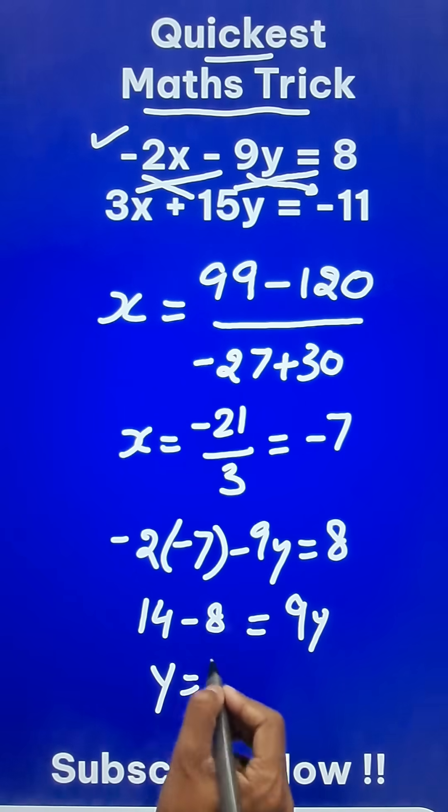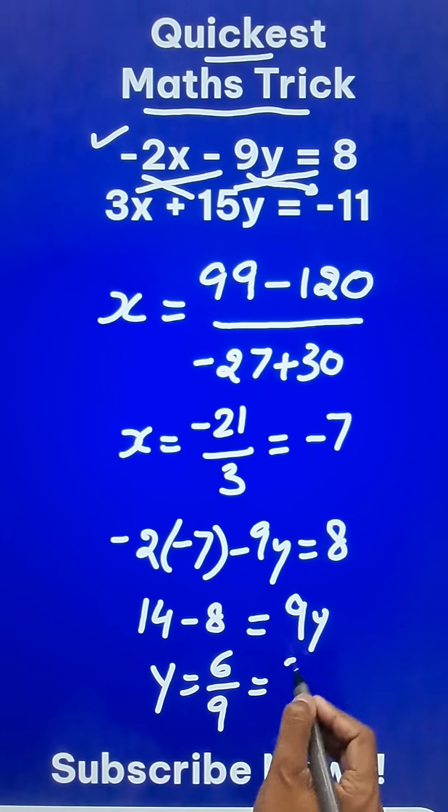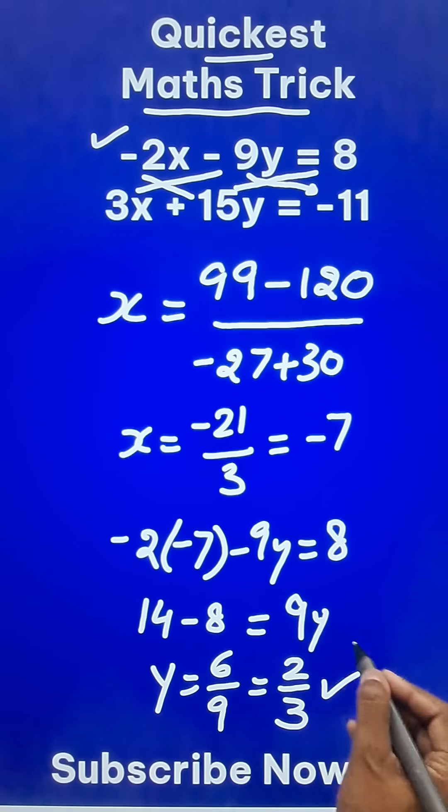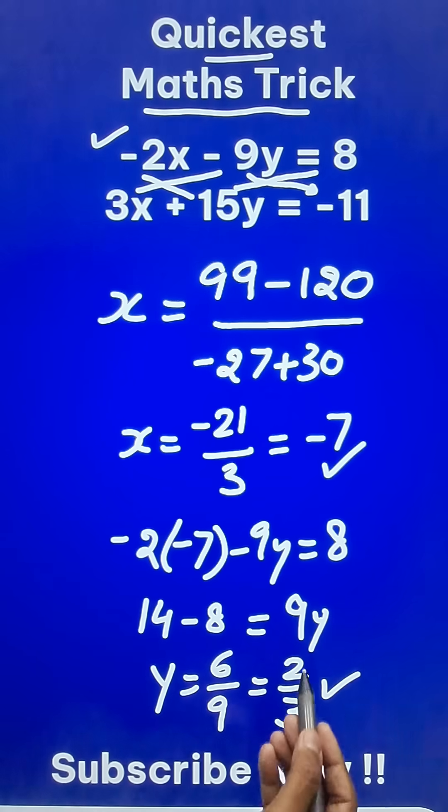So y is 6 upon 9, which is 2 upon 3. Now you can check your answer. x is minus 7 and y is 2 by 3.